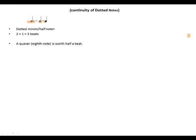A quaver or eighth note is worth half a beat. Adding a dot increases its length by 50 percent. So we have a dotted quaver, which equals a quaver plus a semiquaver.